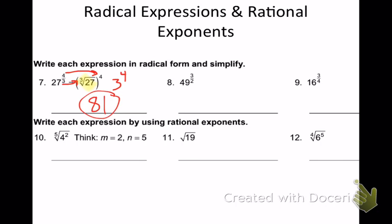Let's try number 8. Which one is my root — the denominator or numerator? The denominator is my root. So it's like the square root of 49 to the 3rd power. On square roots, there's always an implied 2. What's the square root of 49? 7. Then I take 7 to the 3rd power. 7 times 7 is 49, and 49 times 7 is 343.